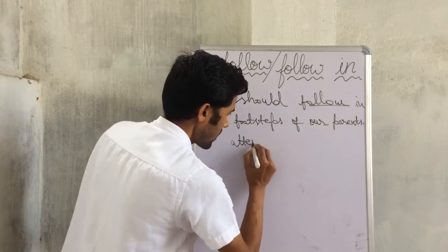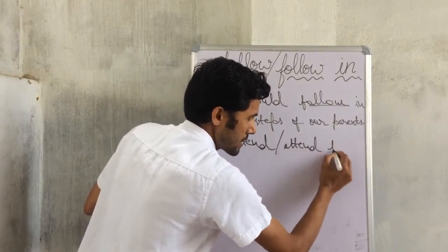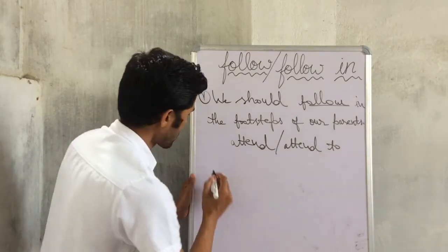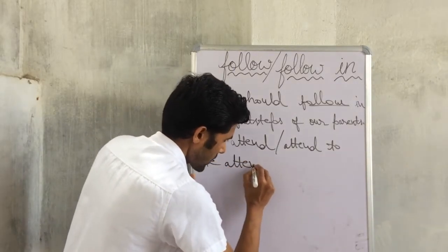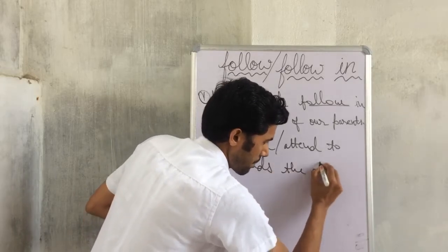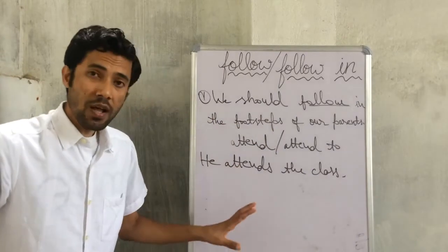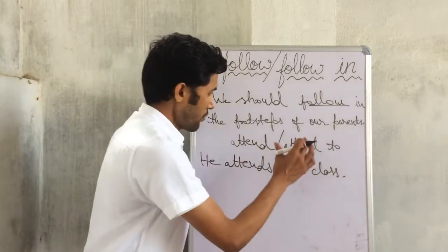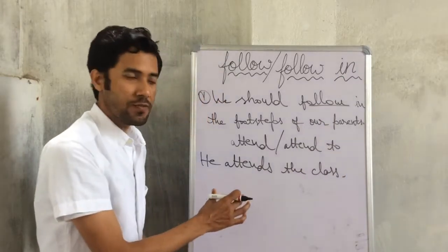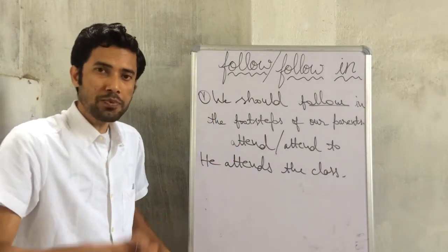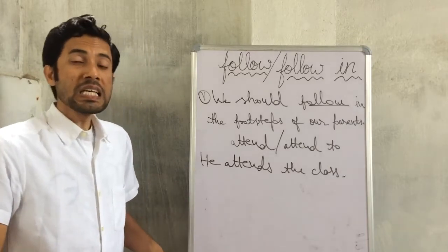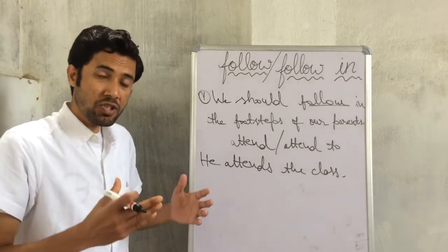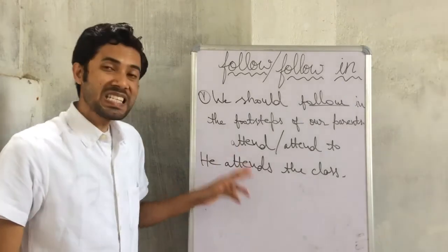You must have come across 'attend' and 'attend to.' These two also appear to be the same, yet there is some difference. For example: 'He attends the class' simply means he is physically present in the class — this sentence is grammatically correct. But if we say 'he attends to the class,' it means he is not simply physically present. Rather, he is actively participating, involved in what is going on, and listening attentively to the lecture.